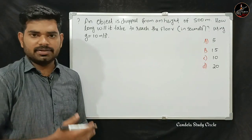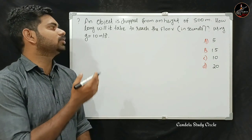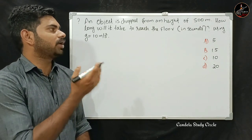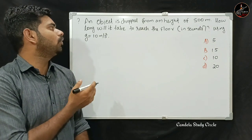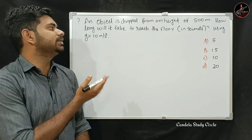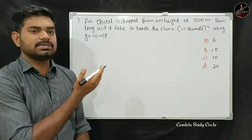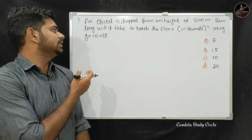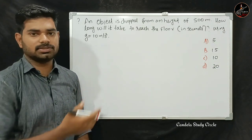An object is dropped from a height of 500 meters. How long will it take to reach the floor in seconds? Using g equal to 10 meters per second square.